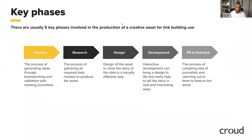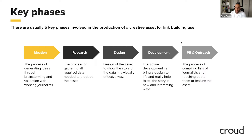The key phases involved in this kind of work are usually five. We normally start with the ideation phase, which is the process of generating ideas through brainstorming and validation with working journalists. Then the research phase, where we gather all the data needed to produce the asset. Then the design phase, where we bring the research and data together visually. If we're making something interactive, there will be a development stage. And very importantly, the PR and outreach phase, where we drive results by pushing the asset out to different news publications online.